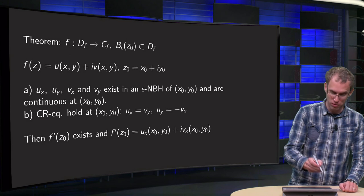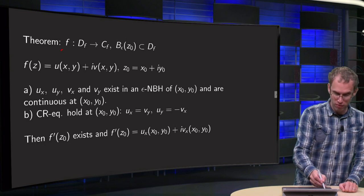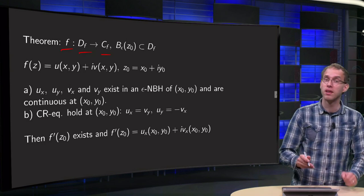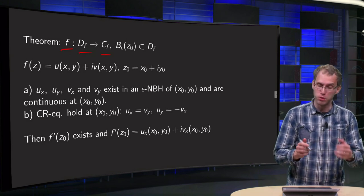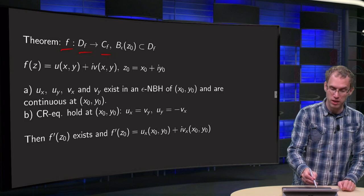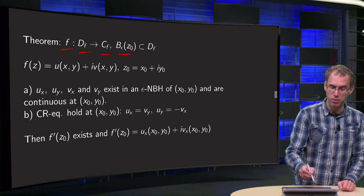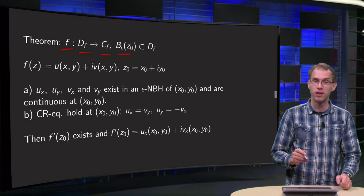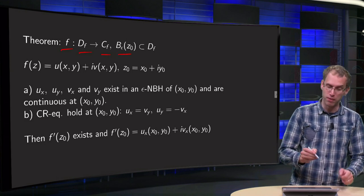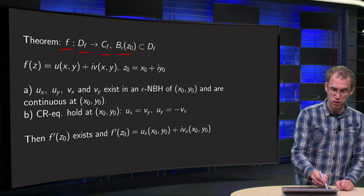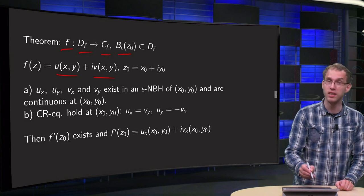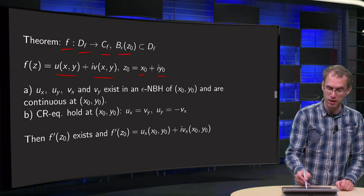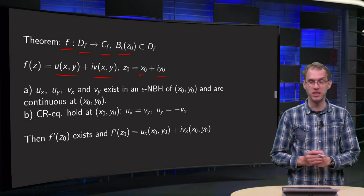Suppose we have a function f from a domain to its codomain, and we have some small disk inside the domain centered at z0. We write f as usual as u plus i times v, and we write z0 as x0 plus i times y0.